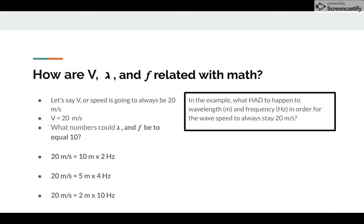So in the example, what had to happen to wavelength and frequency in order for the wave speed to always stay 20 meters per second? In this case, wavelength was 10, frequency was 2. If wavelength goes down to 5, what happened to frequency? It went up. And if wavelength goes down to 2, frequency goes up. Very simple. This is called an inverse relationship.